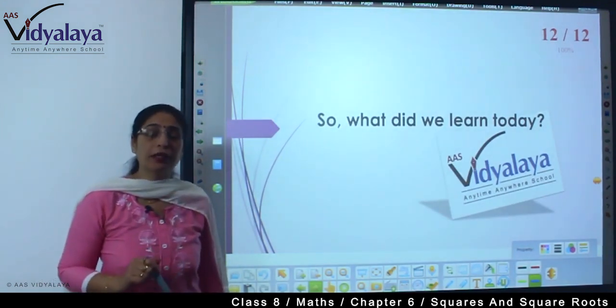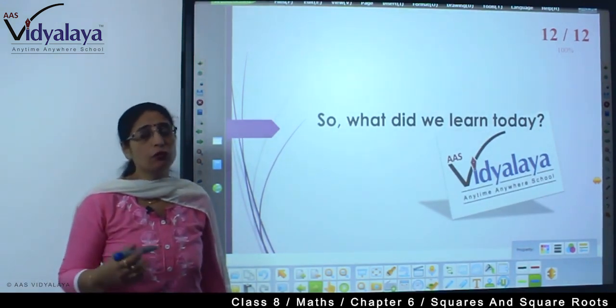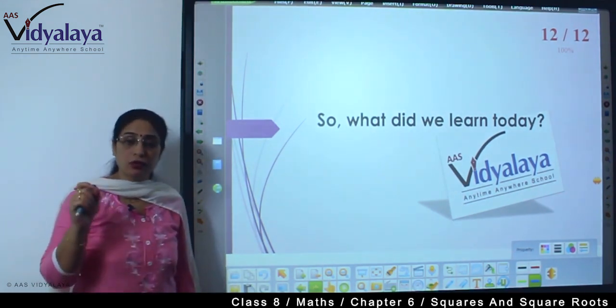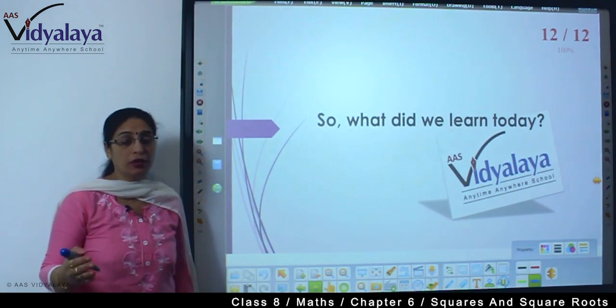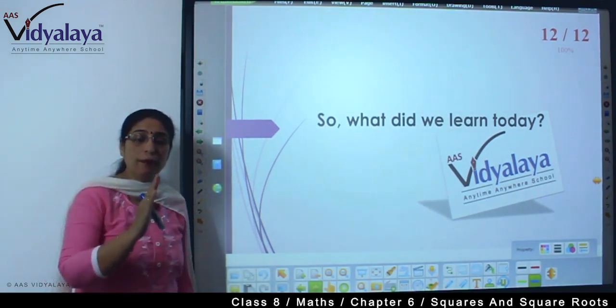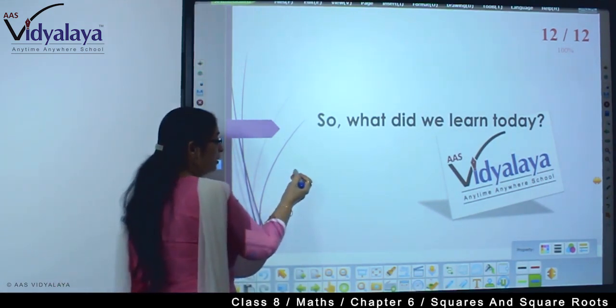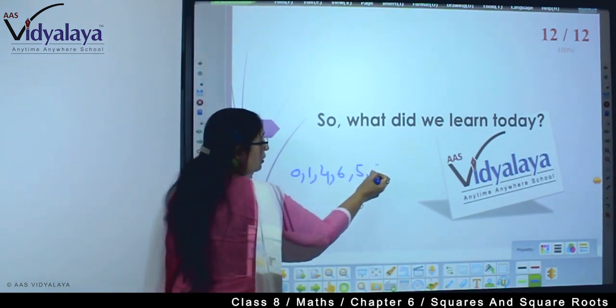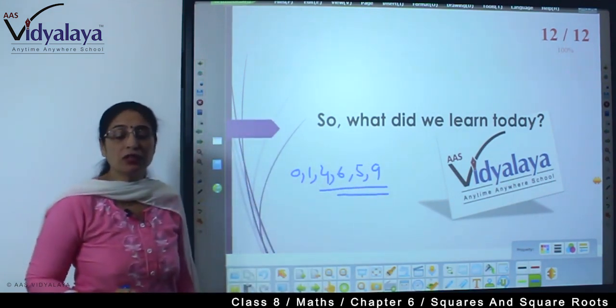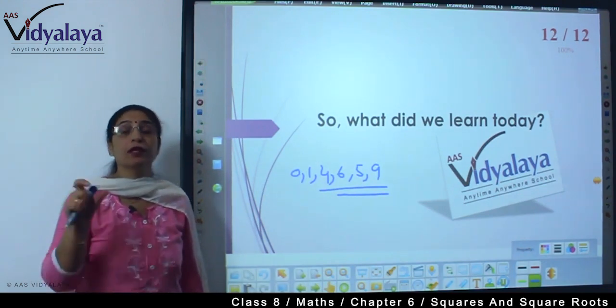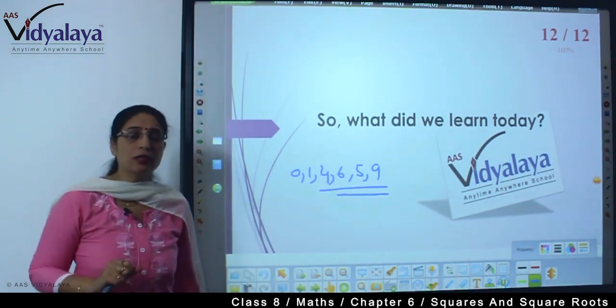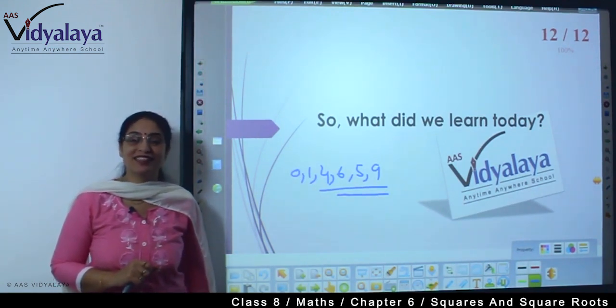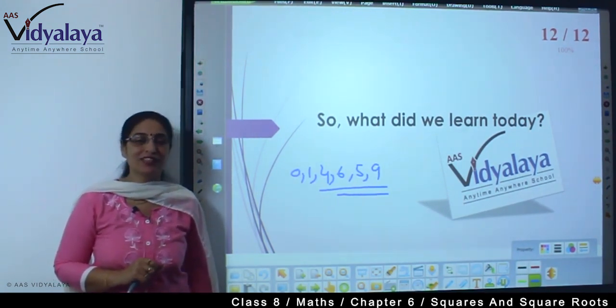So what did we learn today? Today we learned about the more easier method to find out the squares. And then we have also learned by looking at the number we can easily tell whether the square of that number is there or not. Like if our numbers have either 0, 1, then 4, 6, 5, 9, if we are getting such numbers, then we know this is a square of some number, it's a perfect square. So all these things we have learned today. In the next session there are many more interesting things to learn from this chapter, but that I will take in the next session. Till then have a nice revision of the things that you have learned today. Bye.